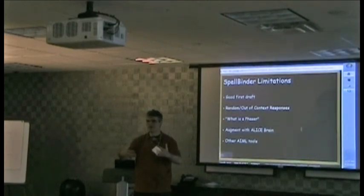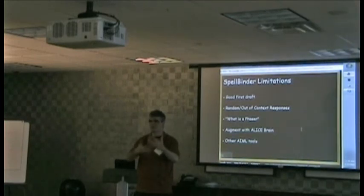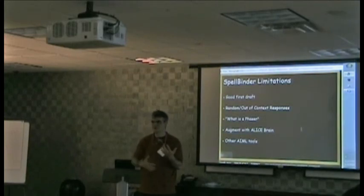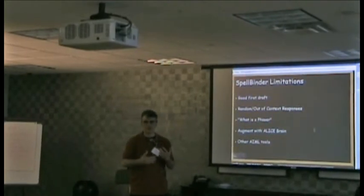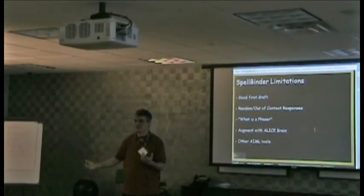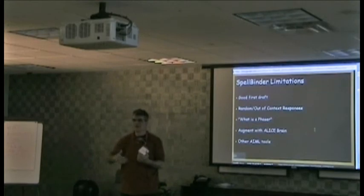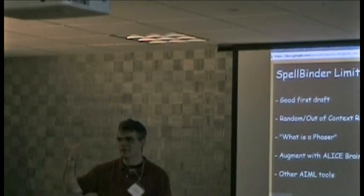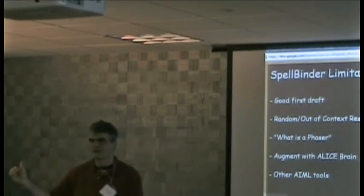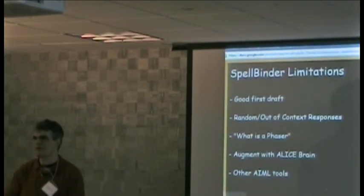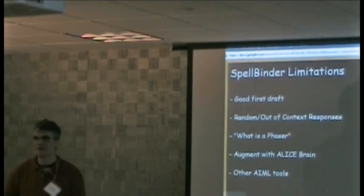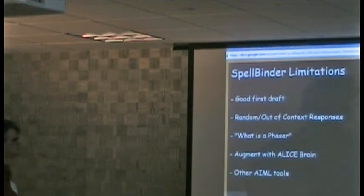And AIML, for those of you who don't know, has this kind of additive property where you can take two bots and just glom them together. And if there are any duplicate patterns between those two bots, depending on which one you load first, the one you load second will have priority over the first one. So if the Kirk bot has a response for name, which is, my name is Captain Kirk, then that will override the response of the Alice bot's name, my name is Alice. But the Alice bot may well have an answer to the question like, what is a phaser already built into it? So it's augmenting the knowledge of the Kirk bot with the Alice brain.